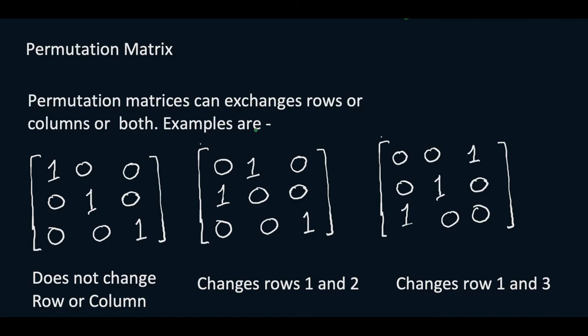Permutation matrices are matrices that can change the rows or the columns when multiplied to a matrix A. For example this is an identity matrix.